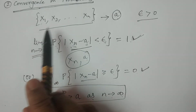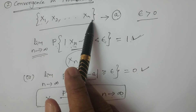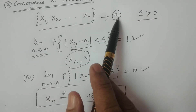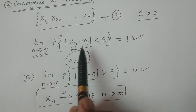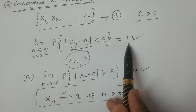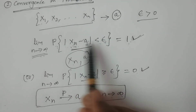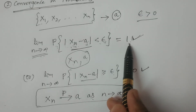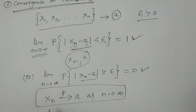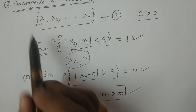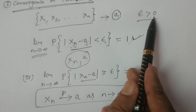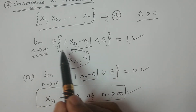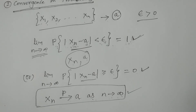A sequence of random variables x1, x2, and so on xn converges in probability to a constant A if xn converges in probability to A as n tends to infinity — that is, limit as n tends to infinity of the probability that the modulus of xn minus A is less than epsilon equals 1. We write this as xn converging in probability to A as n tends to infinity. Hope you understand. Thank you so much.